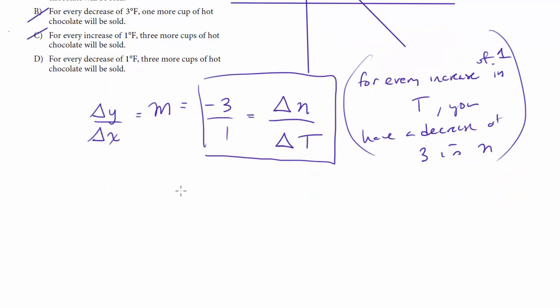If I have negative 3 over 1, that's the same thing as writing 3 over negative 1. They're identical. So notice if I decrease the temperature by 1, I increase the number of cups of hot chocolate sold by 3. And again, that makes sense. The colder the temperature gets, the more hot chocolate you're going to sell. So of the choices, D is the answer.